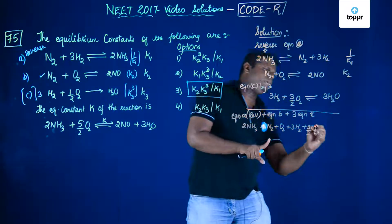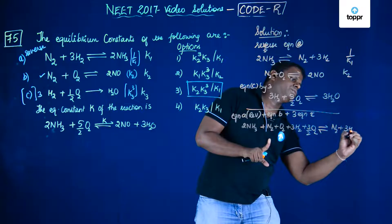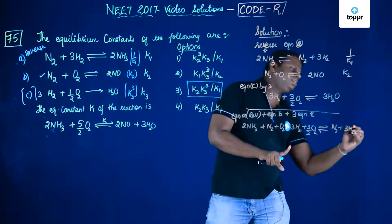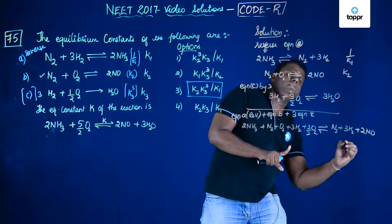It would give me N2 plus 3H2, plus 2NO, plus 3H2O.